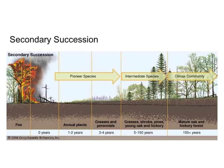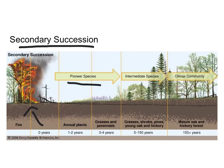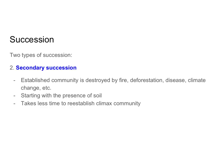We can contrast this with secondary succession, which is very similar to primary except that the soil already exists. A fire might come through and wipe out an entire area, but even though all the plants died, there's still soil, which means we don't really need pioneer species. The pioneer species section is either not there or much shorter, and we can jump right into grasses, then small shrubs, then trees. In secondary succession, an established community is destroyed by something — a fire, deforestation, disease, climate change — but we already have soil, so it takes much less time to reestablish the climax community.